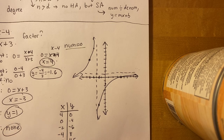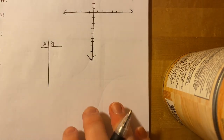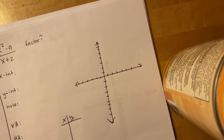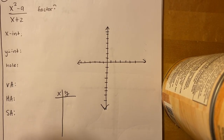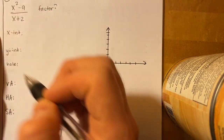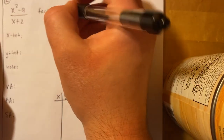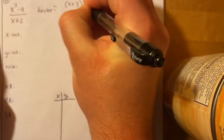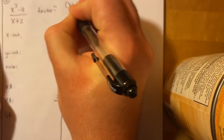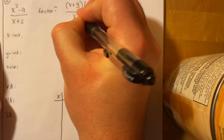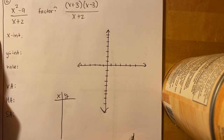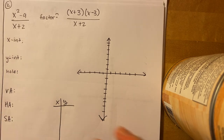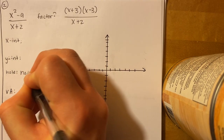Our second example is (x² − 9) over (x + 2). First step is always to factor. We know x² − 9 is a difference of squares, so it factors to (x + 3)(x − 3), over (x + 2). Nothing cancels, so there are no holes.